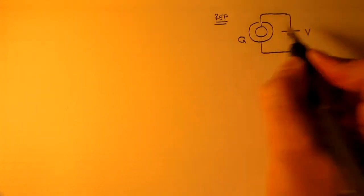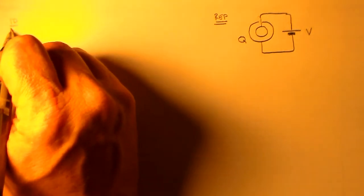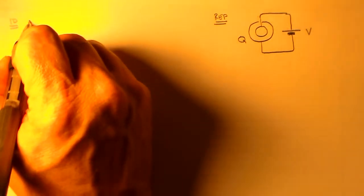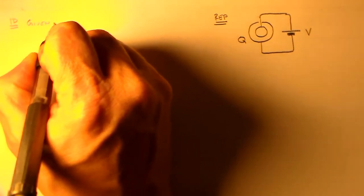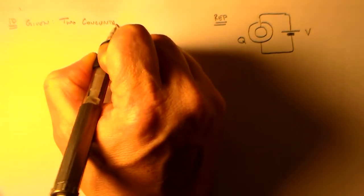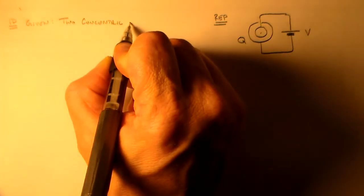So what I'm going to do here is I'm going to have two concentric spherical shells connected to a battery, and we're going to find the capacitance. Actually, you know we don't really need the battery, but it's good to put it in the representation because we do need to talk about the voltage to find the capacitance, right? So we have these two concentric spherical shells, we want to find the capacitance.